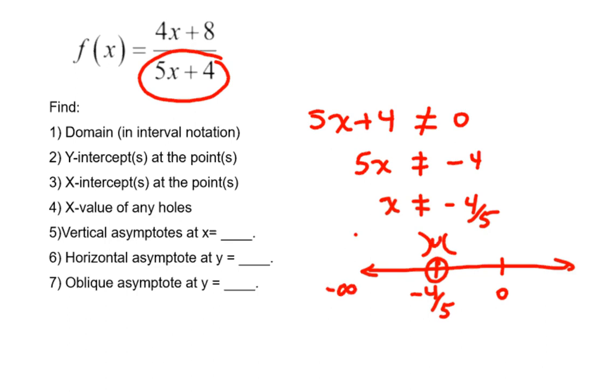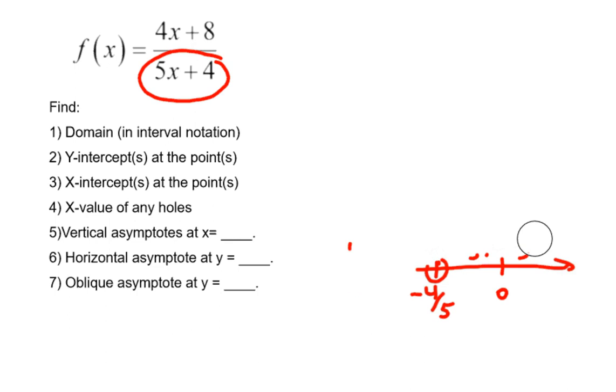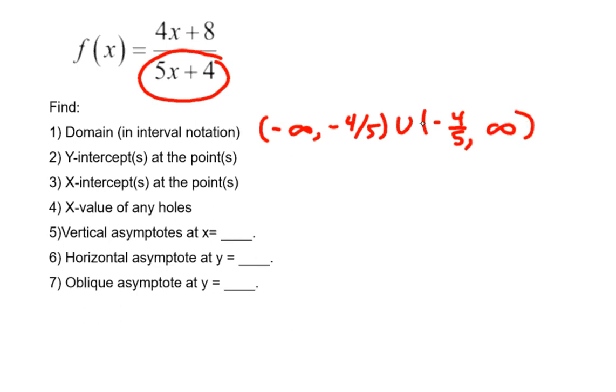Coming from negative infinity up to negative 4 fifths, union from negative 4 fifths to positive infinity. So that's our answer for part 1. Negative infinity to negative 4 fifths, union from negative 4 fifths to positive infinity. And we're done with number 1.